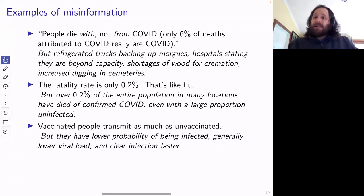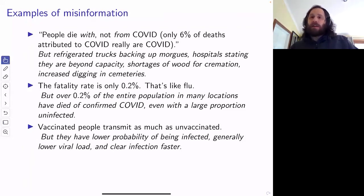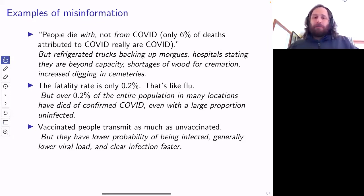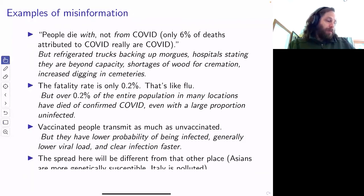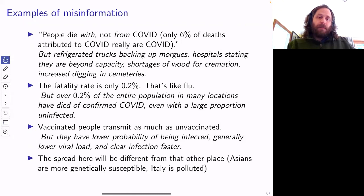Vaccinated people transmit as much as unvaccinated — this is harder. It's harder to collect the data. Part of the issue is that early on, before people had much data, the guidance was 'you may transmit just as easily — you should assume you can.' But it wasn't well communicated that we don't have the information yet. So many people interpreted that as 'no, you really are.' And then we've seen that viral loads can be high and transmission can happen. But we do know some biological things that make that unlikely — viral loads can get as high, but most of the time they're lower, and the peak goes down very quickly.